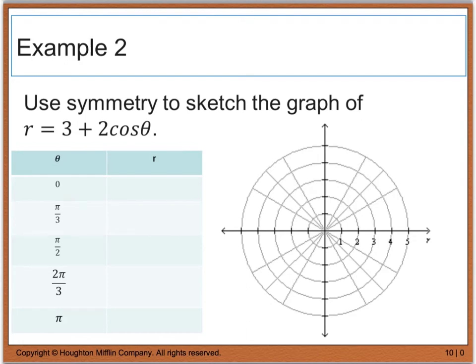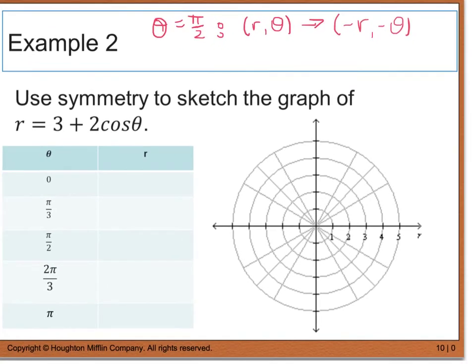Example 2 says to use symmetry to sketch the graph of r equals 3 plus 2 cosine theta. If I'm going to start out looking at the line theta equals pi over 2, then I'm going to take my original point r theta and change it so that it becomes a negative r negative theta. If that gives me the same result as my original equation, then I know I have a graph that's symmetric with respect to the line theta equals pi over 2.